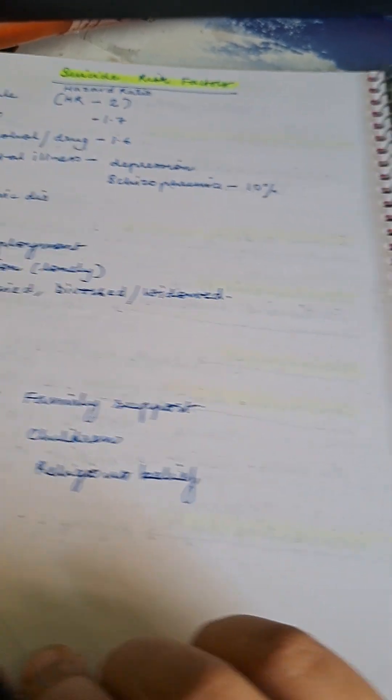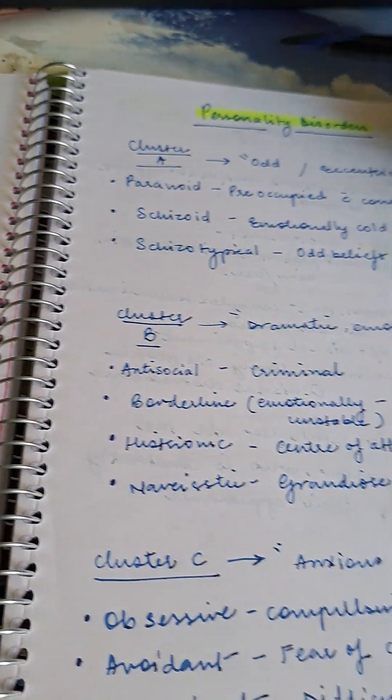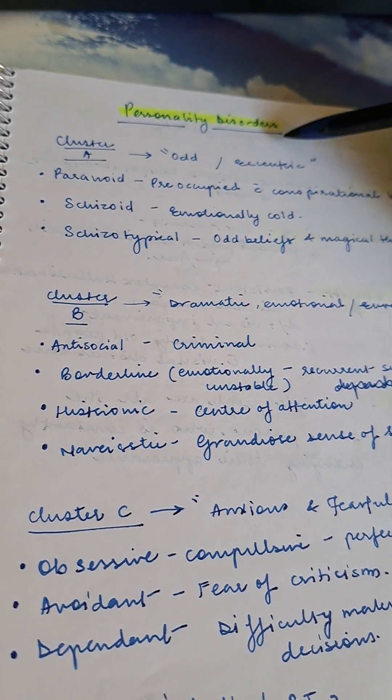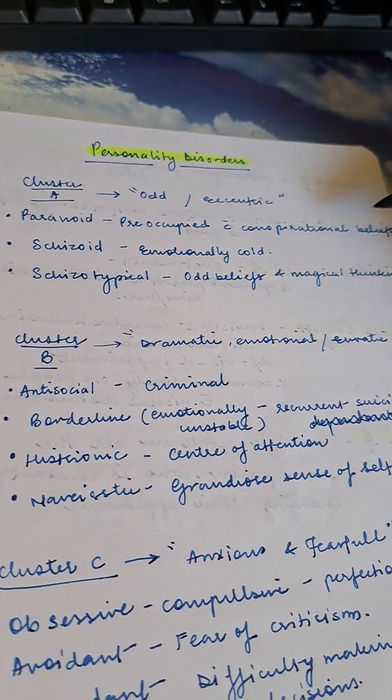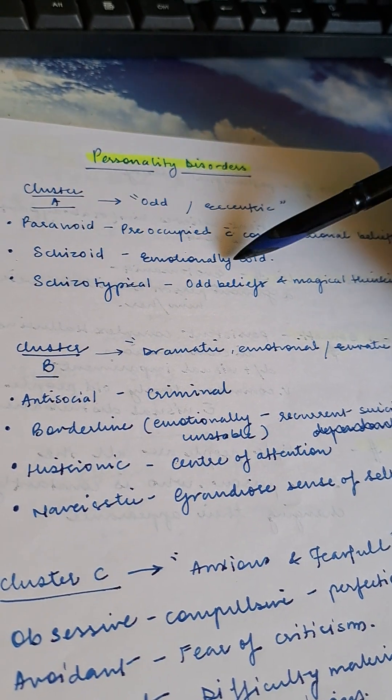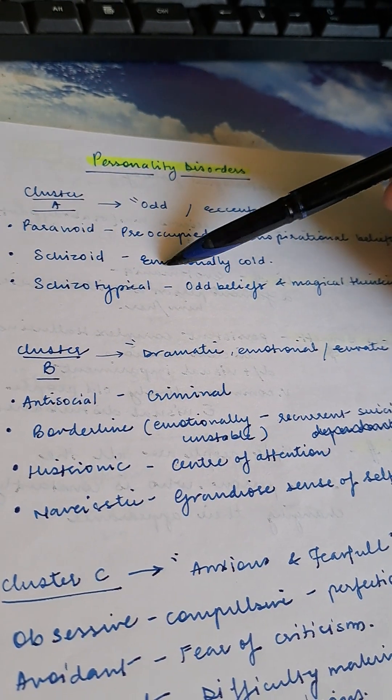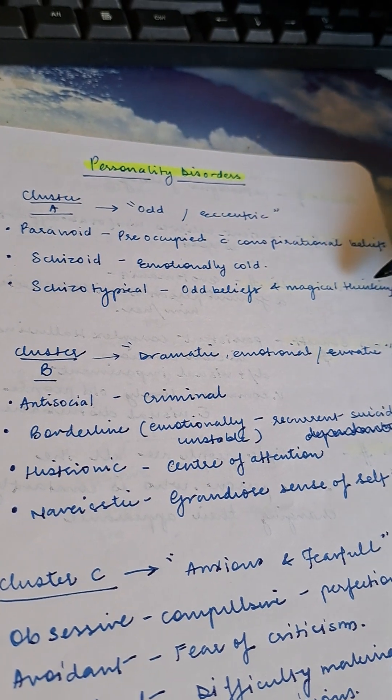Personality disorders. Cluster A - odd and eccentric: paranoid are preoccupied with conspiratorial beliefs, schizoid are emotionally cold, schizotypal have odd beliefs and magical thinking.